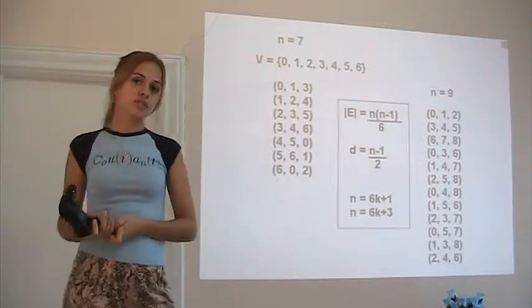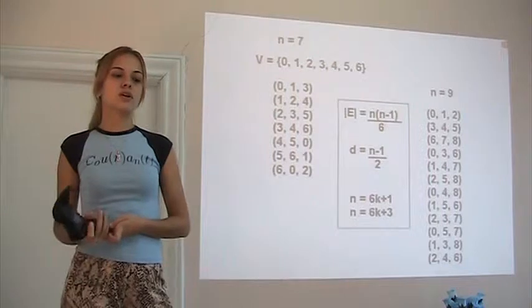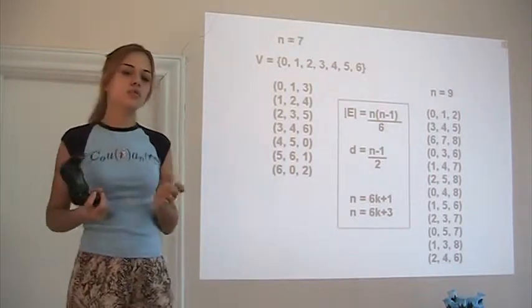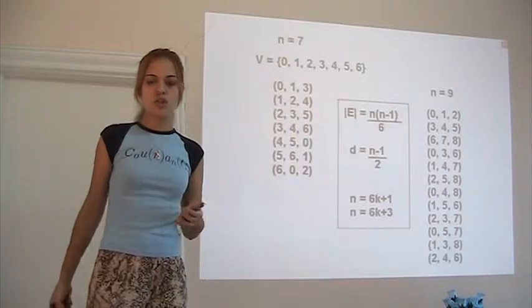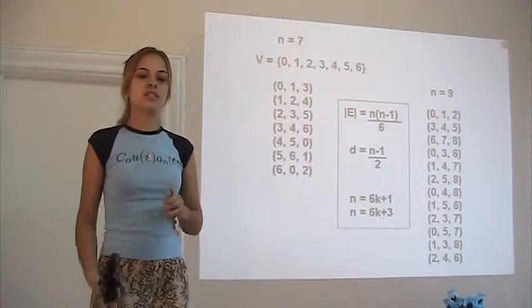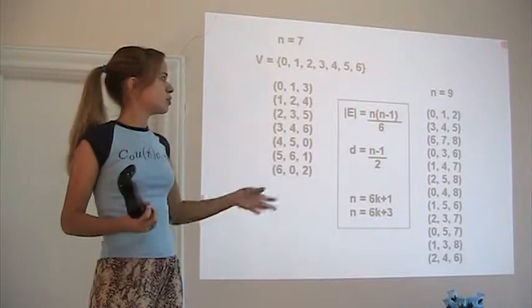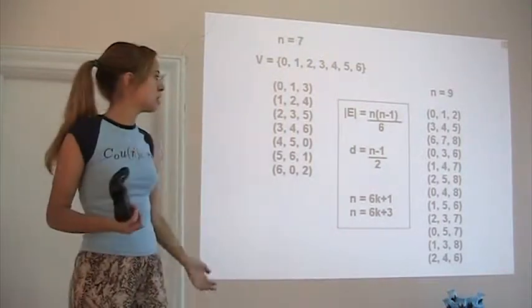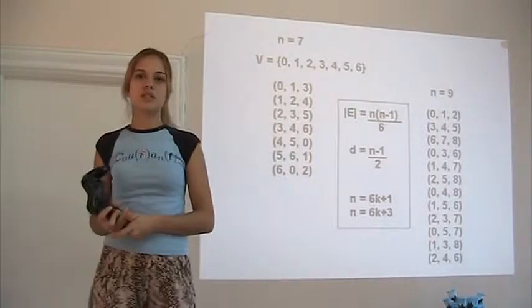The third chapter is about Steiner triple systems. Steiner triple systems are a set of n vertices and edges consisting of three vertices each, in such a way that every pair of vertices is in exactly one edge. So the number of edges is n(n-1)/6, and the only n values that work are in the form 6k+1 and 6k+3.